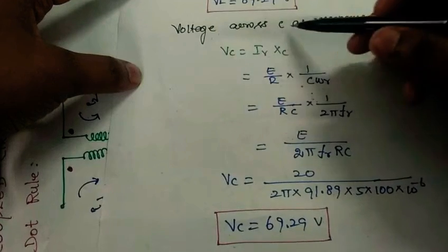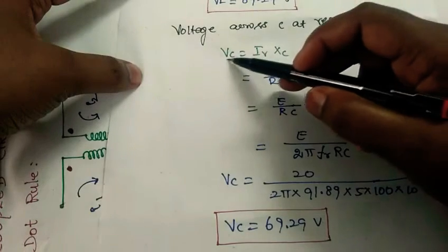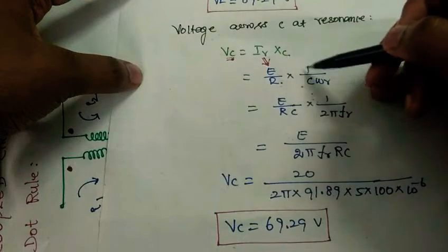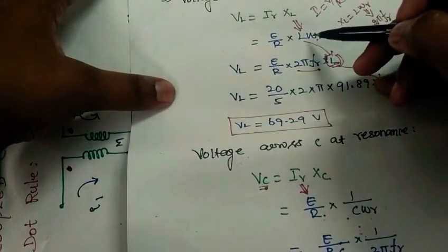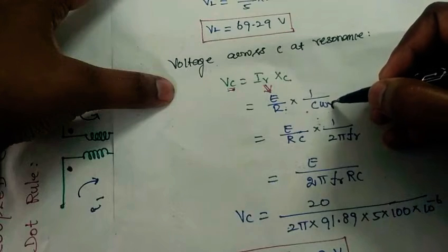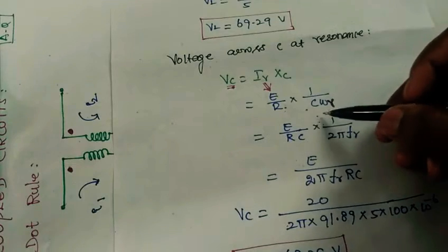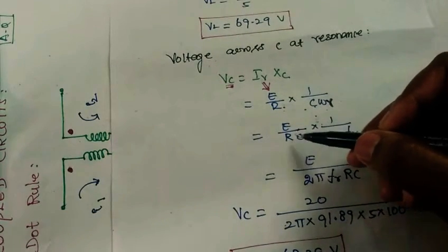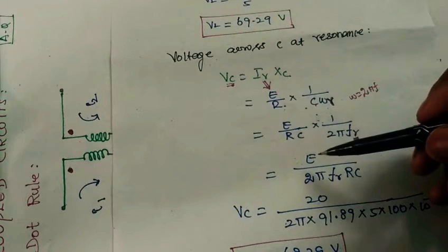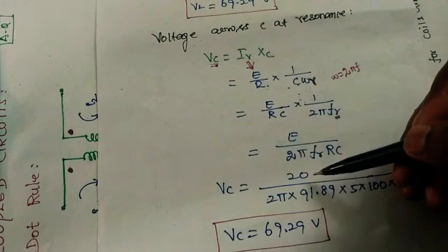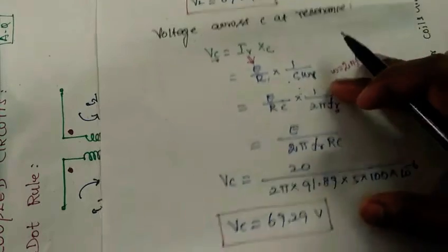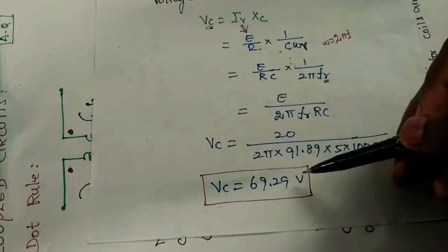Voltage across capacitor at resonance: VC equals I times XC equals E by R times XC. XC equals 1 by C omega. At resonance, omega equals omega R, so XC equals 1 by C into omega R. Omega equals 2 pi F, so this becomes E by 2 pi FR into R into C. E value is 20, FR is 91.89, R value is 5, and capacitor value is 100 into 10 power minus 6. When we simplify, VC equals 69.29 volts.